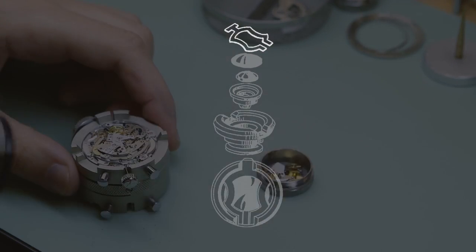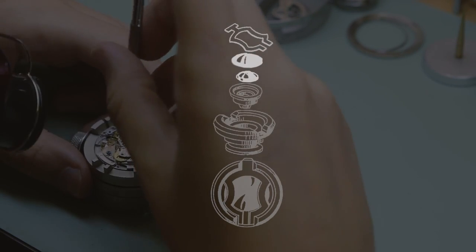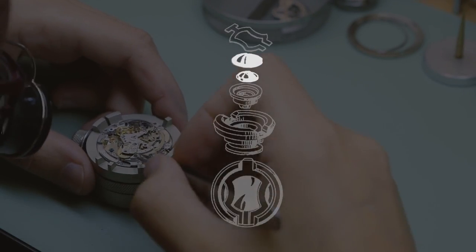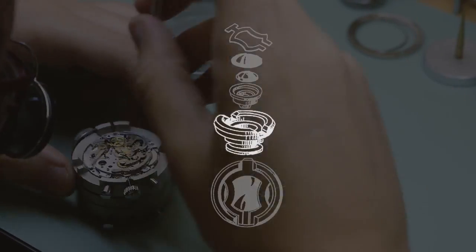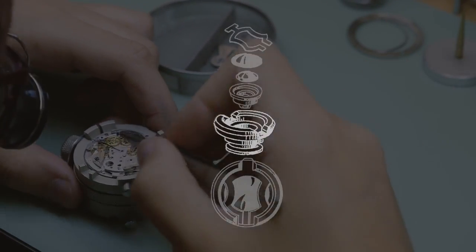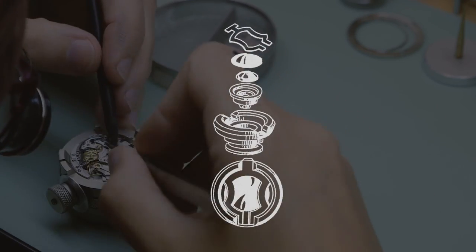The inca block system uses a lyre shaped spring to allow the delicate bearings to shift in their settings under impact until a stronger shoulder of the staff contacts the strong metal end piece so that the pivots and bearings don't have to bear the force of the impact.